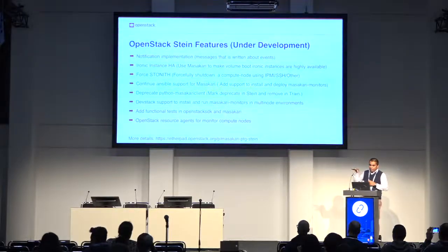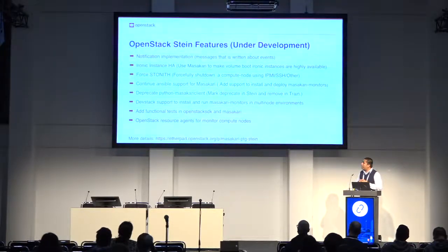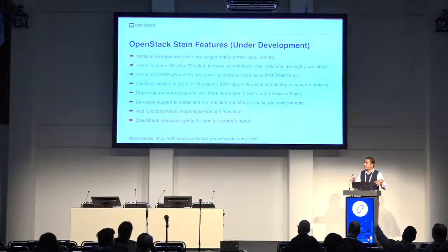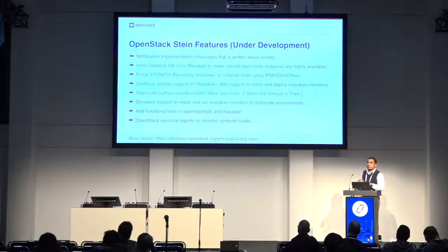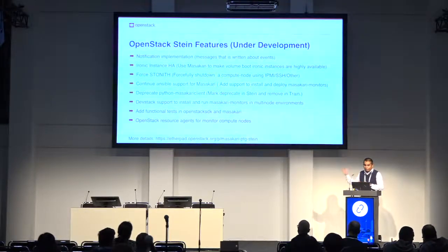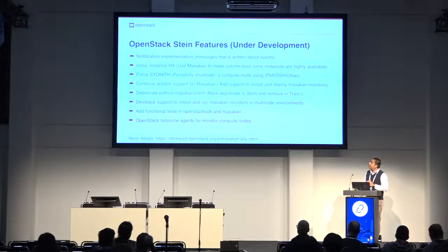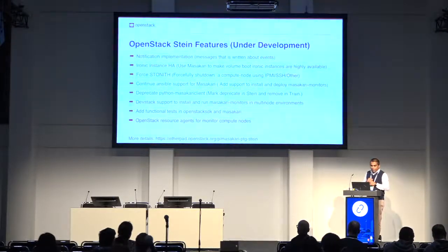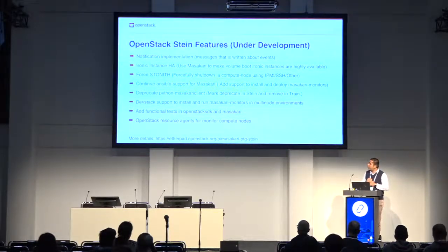We're also going to deprecate the Python Masakari client. We understand we won't be able to totally deprecate it because some features use it in other places. The definite change is that the CLI will be gone, and instead we can use the OpenStack client — so there will be no degradation of features, but that code will disappear in this Train release. We're also going to improve DevStack support for Masakari monitors, and some of our members are working hard to add functional tests in Masakari and on the OpenStack SDK side.